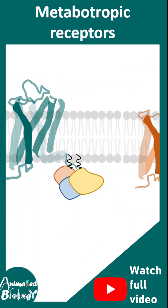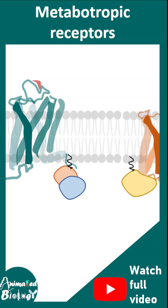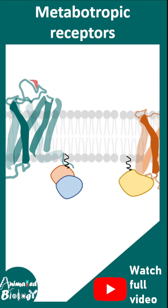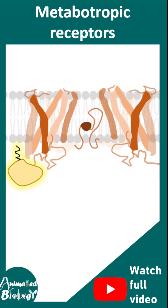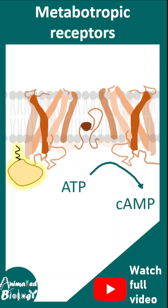In the case of metabotropic receptors, they are GPCRs, so after ligand binding the G protein gets activated and eventually moves to adenylate cyclase, activating it. This triggers the second messenger response by generating cyclic AMP, which can lead to a plethora of downstream events.